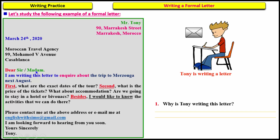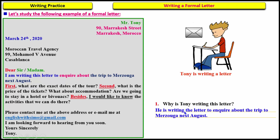The letter continues: Moroccan Travel Agency, 99 Muhammad 5th Avenue, Casablanca. 'Dear Sir or Madam' — we say 'Dear Sir or Madam' if we don't know the name of the person. 'I am writing this letter to inquire about the trip to Merzuga next August.' So Tony is writing the letter to inquire about the trip to Merzuga next August.